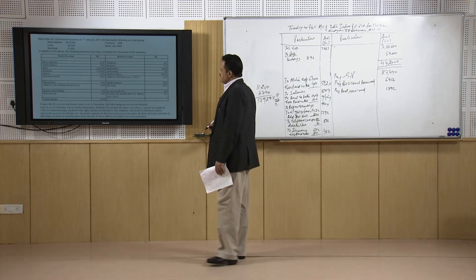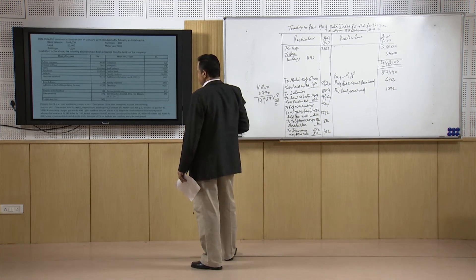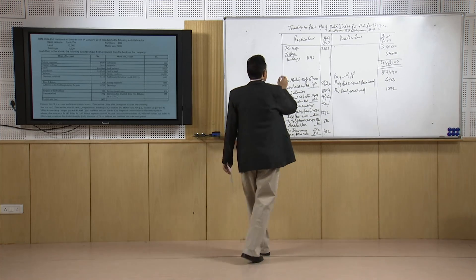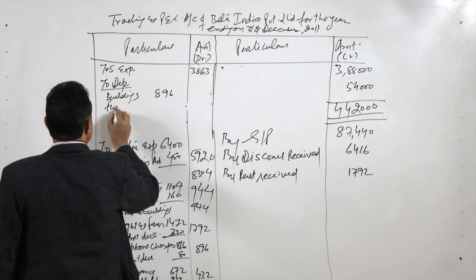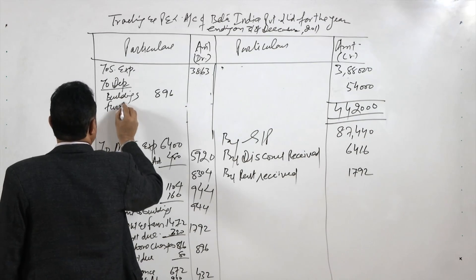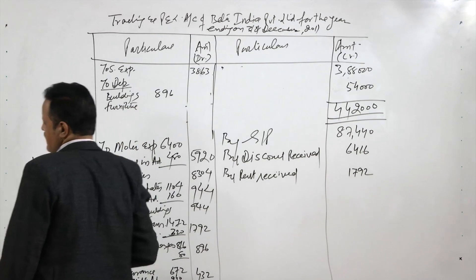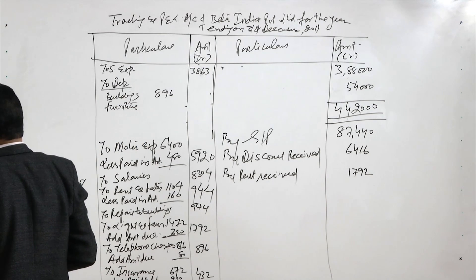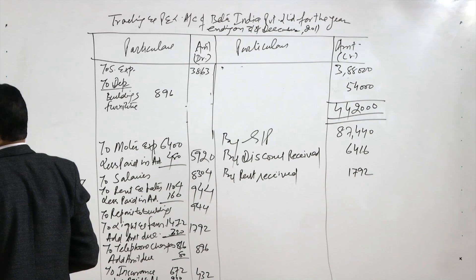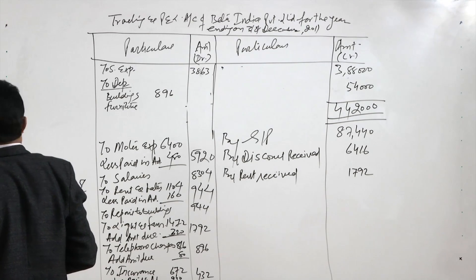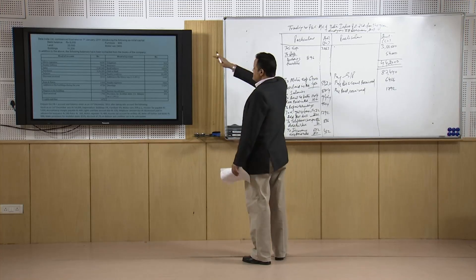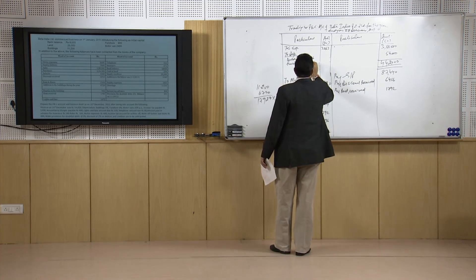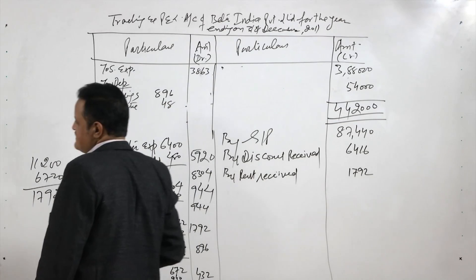Next asset is furniture. The depreciation on furniture is 6 percent. The furniture amount is 800 rupees and depreciation at 6 percent works out as 48 rupees.